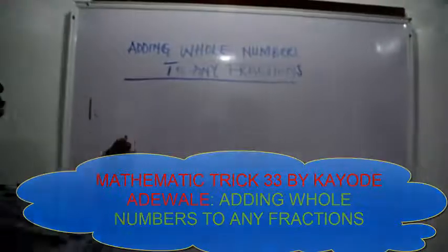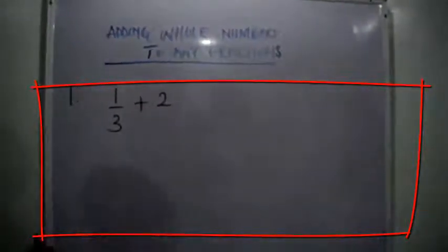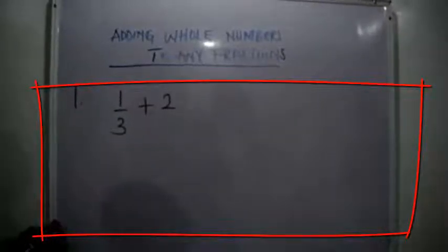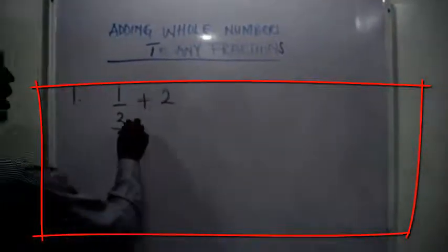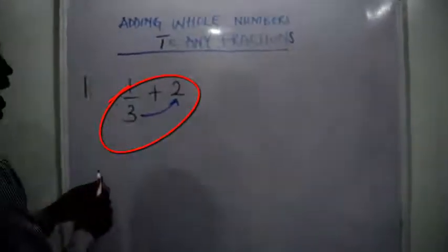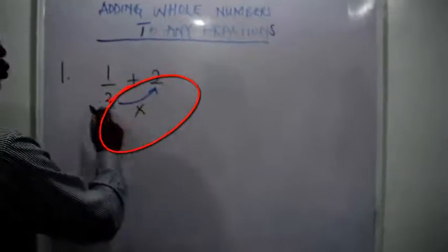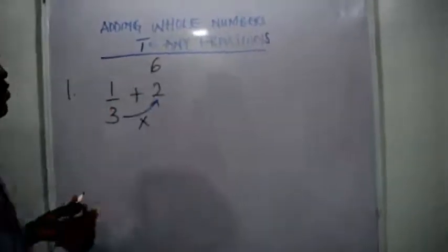Example 1: If I have 1 over 3 and I'm asked to add 2 to that fraction 1 over 3, what I just need to do is take this denominator and multiply it with that whole number. Multiply this denominator with this whole number, which is 2: 3 multiplied by 2, and that will give me 6.